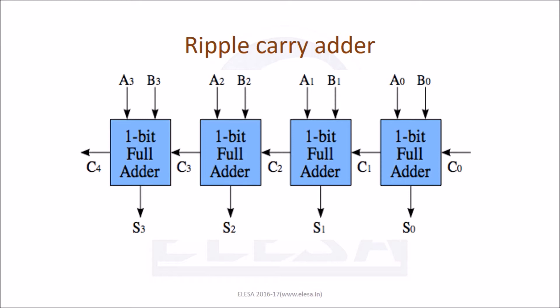In ripple carry adder, starting from A0 to A3 and from B0 to B3 and C0 are the input bits. The final carry of 4-bit addition is C4, which depends upon the carries produced by the previous stages, i.e. C1, C2 and C3. Do you wonder why this name ripple carry adder is given to it? Because the carry ripples through the previous stages to produce the final carry.